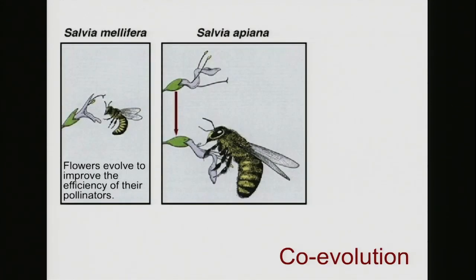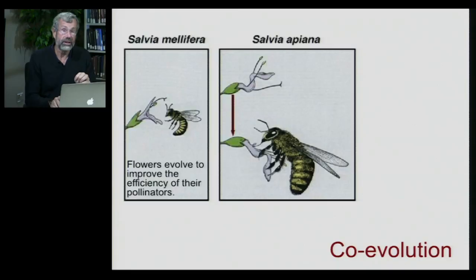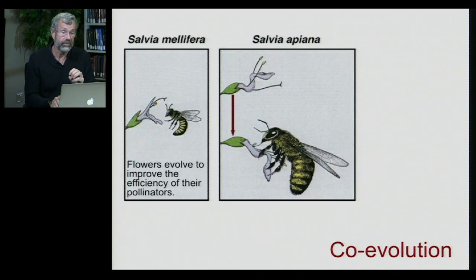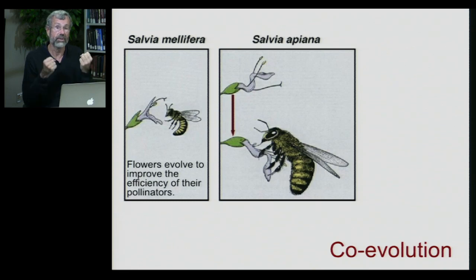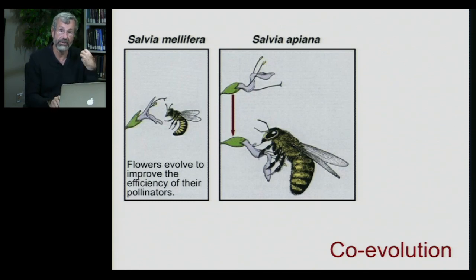In terms of coevolution, we've seen how specific the plant and the bee may interact with each other. In this case, salvia has a particular place that it deposits its pollen on the bee. The bee receives the pollen on a particular part of its body before it then transfers the pollen to yet another plant, thus fertilizing the seeds.